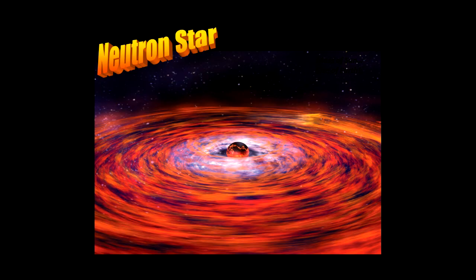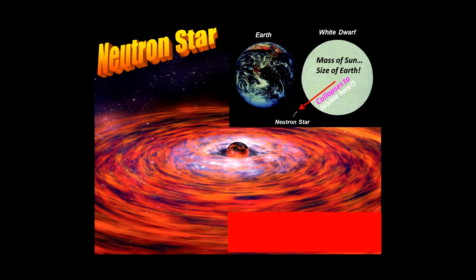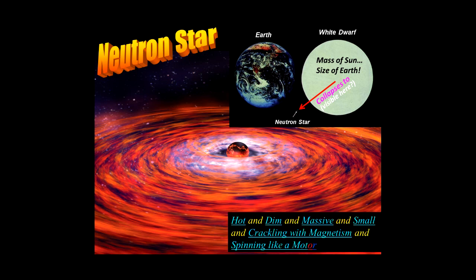This is a particular artistic rendition of a neutron star I like. Compare Earth and a white dwarf. White dwarf's about the same size. But think of taking that white dwarf and collapsing it to something a few miles across. You may not even see the little pixel illuminated there representing the approximate scale for a neutron star. A summary sentence I might put together for what a neutron star is, is that it's an object that's hot and dim and massive and small and crackling with magnetism and spinning like a motor. Sounds a little bit contradictory almost, but in fact it's not.